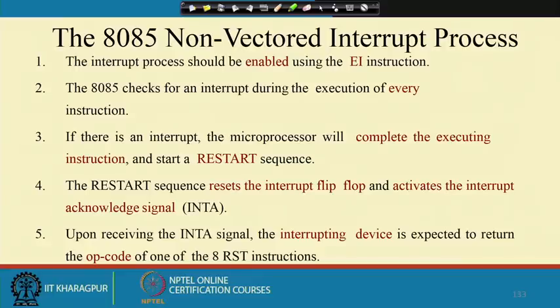If an interrupt occurs, the microprocessor will first complete executing the current instruction. This is very important: it is not that the interrupt has occurred and the processor will leave execution in the middle of an instruction and go to the interrupt service routine — it does not happen like that. Once the current instruction is completed, it will start a restart sequence to begin the interrupt service routine.